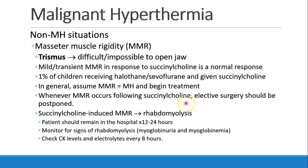Most people who see masseter muscle rigidity will cancel elective surgery and bring the patient back another day. Technically, masseter muscle rigidity can be bad enough to cause muscle damage leading to rhabdomyolysis. Most of these patients should be monitored in the hospital — watch for signs of rhabdomyolysis, including myoglobinuria and myoglobinemia, and check those levels and electrolytes every eight hours.